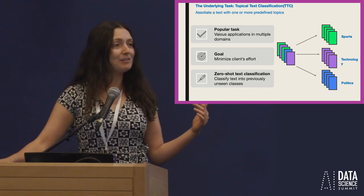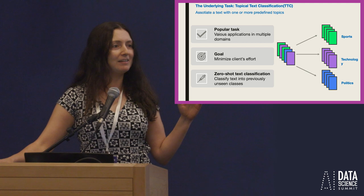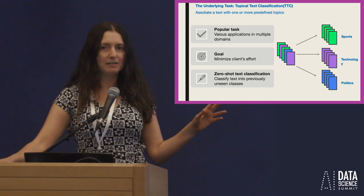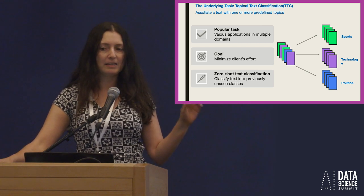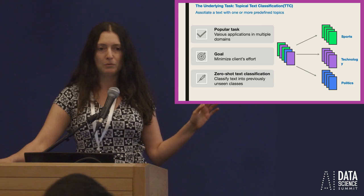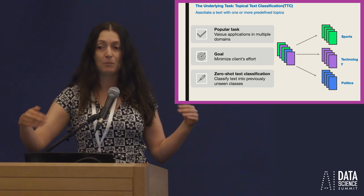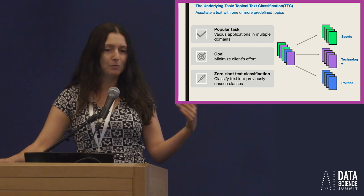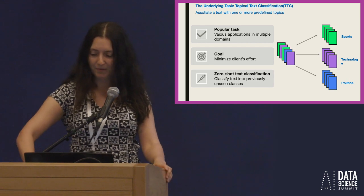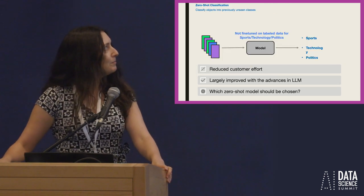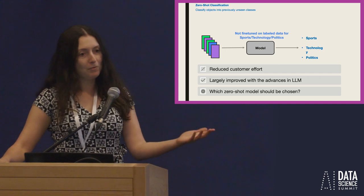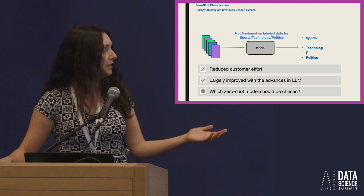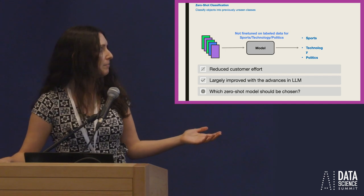This motivated us to look at the topic of zero-shot classification. In zero-shot classification, the task is to classify data into classes that the model was not exposed to during fine-tuning. Without any labeled data provided by the user, the classifier needs to cope with the task defined by the user. A good zero-shot topical text classification solution can dramatically reduce the effort that needs to be invested by the client.